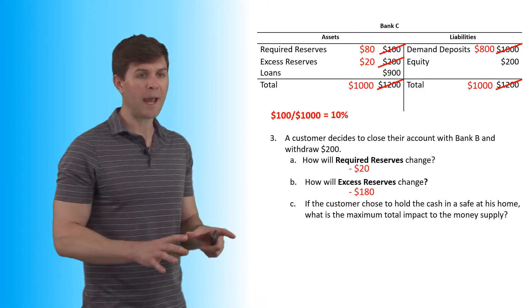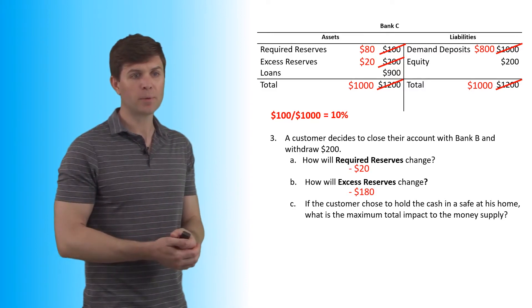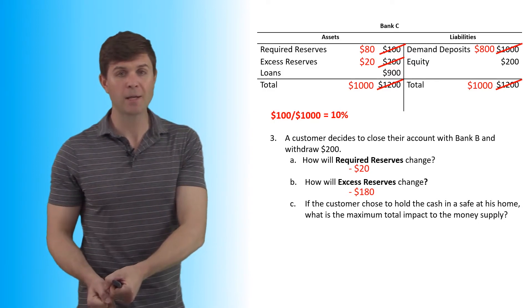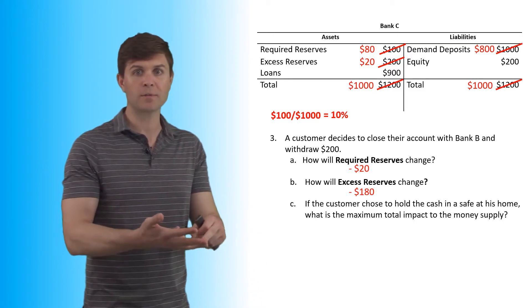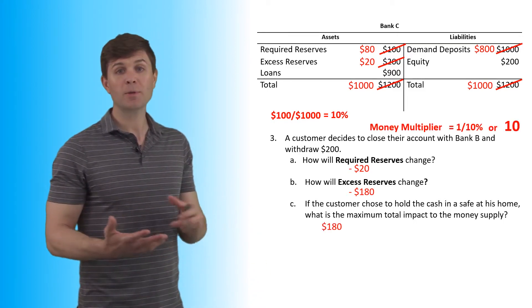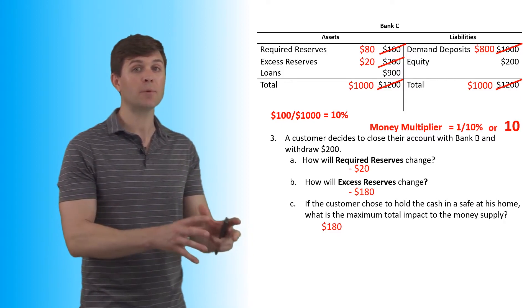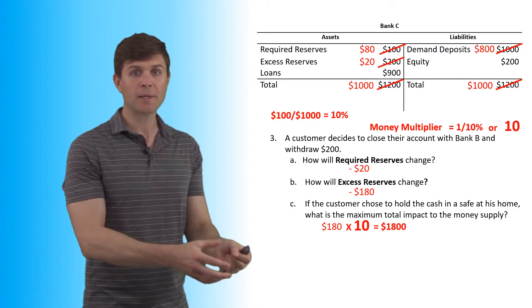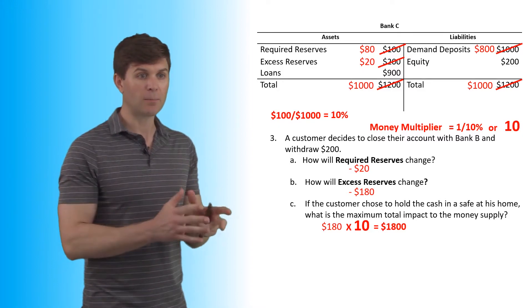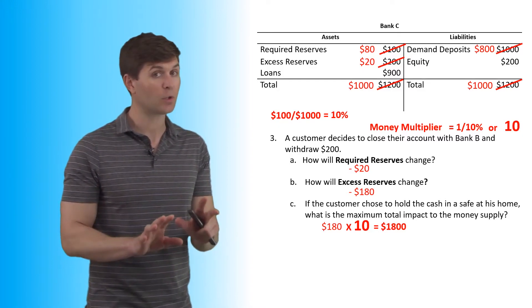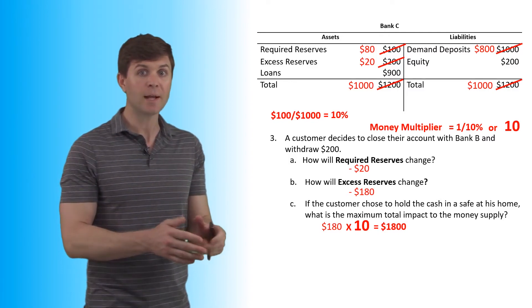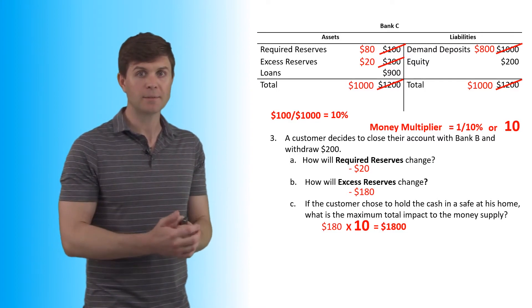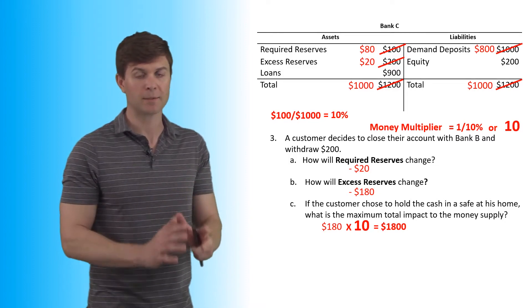Now, if the customer chose to hold the cash in a safe at his home, what is the maximum total impact to the money supply? So this guy's taking $200, he's bringing it home, he's going to put it under his mattress, and he's not going to allow it to be loaned out. It's not going to go through the money multiplier. So we know our money multiplier is 10. We know that the $180 that was able to be loaned out would have eventually turned into $1,800. So this guy coming in, taking $200 out of the bank is going to impact the money supply or the maximum potential impact that it could happen is going to be $1,800. It's not the full $2,000 that that $200 would have turned into because that $200 still exists. So it's only going to be $1,800 that the money supply could potentially be impacted by this negatively.